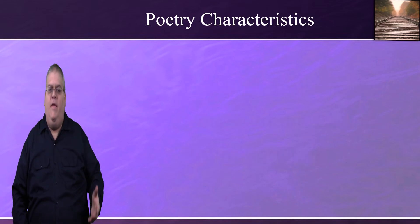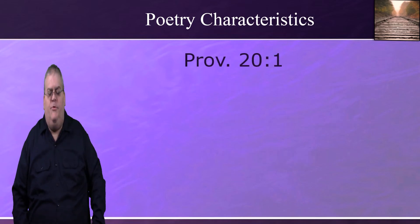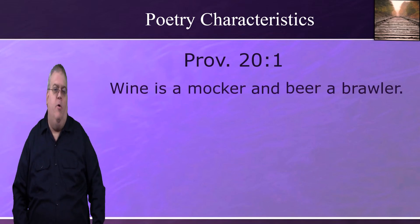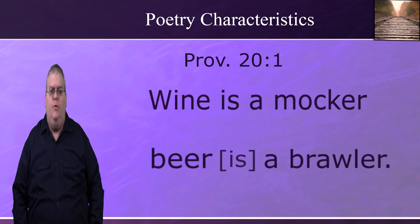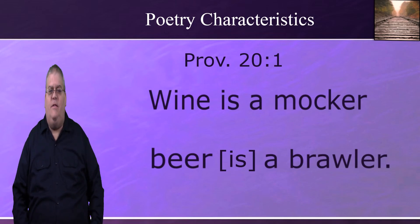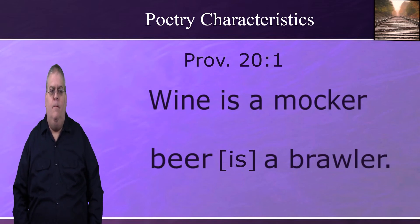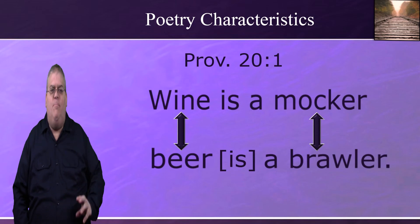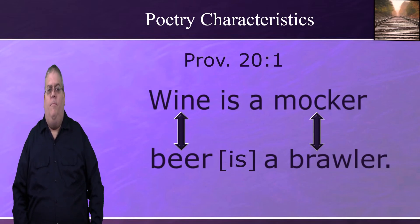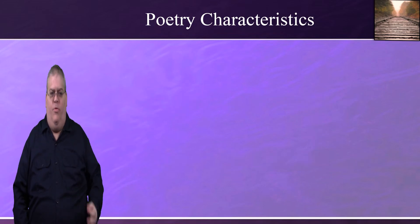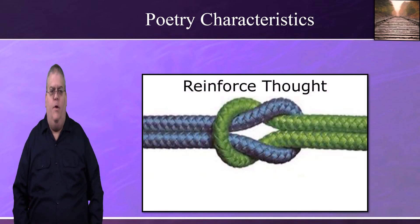When two or more lines of poetry are parallel, the meaning of one line somehow reinforces the meaning of the other. This can best be explained by giving an example. Proverbs 20 verse 1 says, 'Wine is a mocker and beer a brawler.' If we split this into two lines, it's easy to see that the meaning of each is related to the other — almost as if the author said the same thing in two different ways to reinforce the meaning. The individual terms line up and strengthen or refine the meaning of the parallel term. The parallel lines reinforce one another and together state a complete thought.